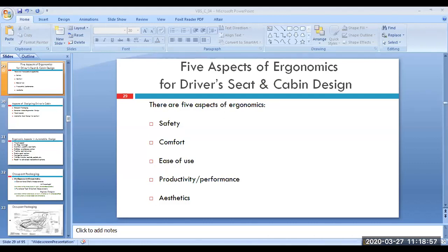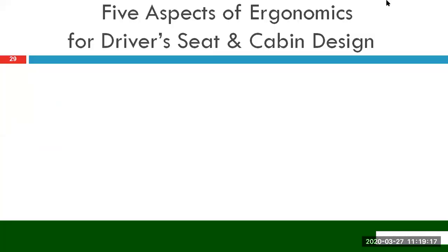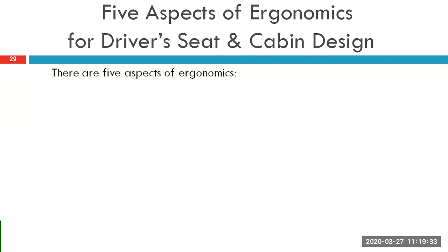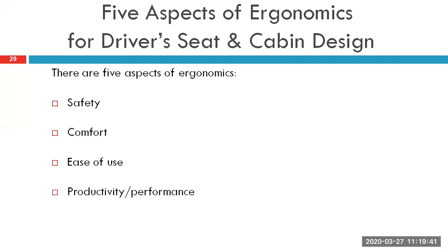The last point we had covered in the lecture was on the aspects of ergonomics for driver's seat and cabin design. The last thing I had asked you to note down was these five points for driver's seat and cabin design. The five aspects of ergonomics are: safety, comfort, ease of use, productivity or performance of the driver, and aesthetics. You want your vehicle to be designed in such a way that it is safe for the occupants as well as the driver — that is why safety is the first aspect.